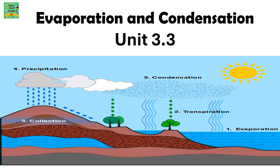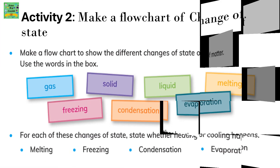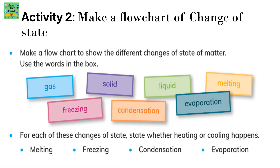Evaporation and Condensation. Here's an activity you could do: make a flow chart to show the different changes of state of matter. Use the words in the box — gas, solid, liquid, melting, freezing, condensation and evaporation. For each of these changes of state, state whether heating or cooling happens.